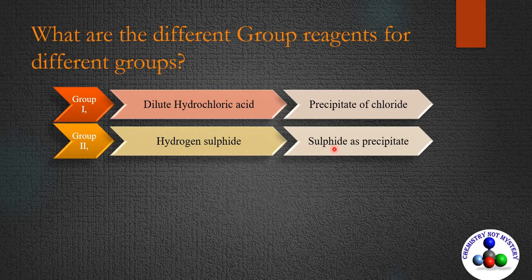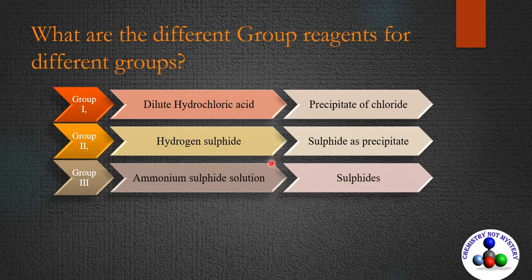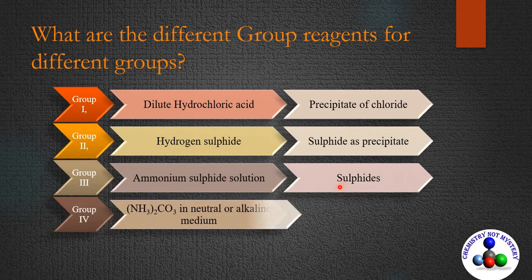Hydrogen sulfide gas or its saturated aqueous solution is the group reagent for the second group — cations of this group form precipitates in the form of sulfides. The third group reagent is ammonium sulfide solution, or hydrogen sulfide gas in the presence of ammonia and ammonium chloride. Cations of the third group do not react with group reagents of the first or second group.